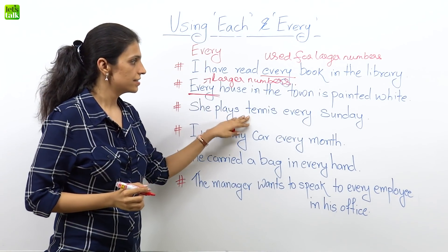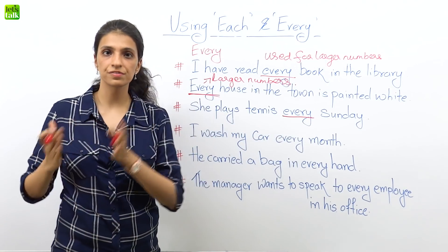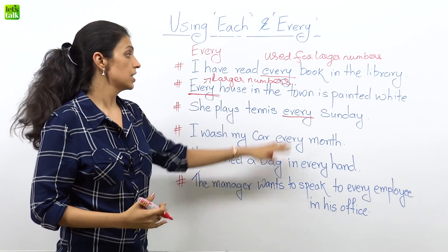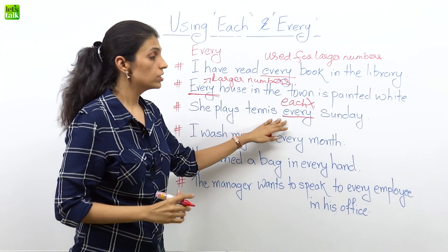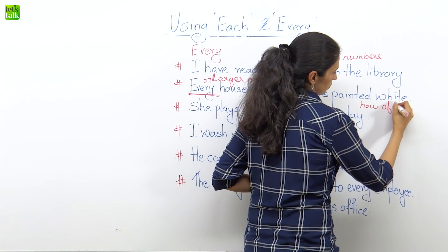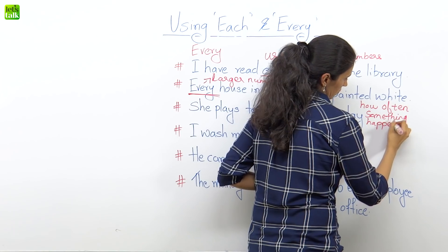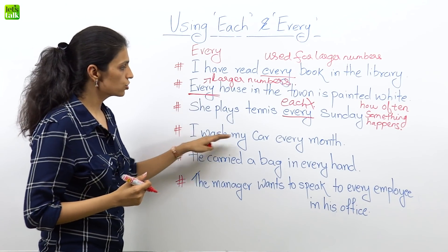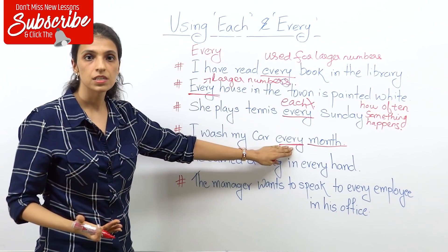Next: 'she plays tennis every Sunday.' Here I am defining the frequency — telling you how often something happens. When you want to say how often something happens, you use 'every.' A lot of people would say 'each Sunday' — this is not correct, because we are talking about the frequency of an action. So when you talk about frequency, remember to use 'every.' Like: 'I wash my car every month' — I'm stating a frequency.